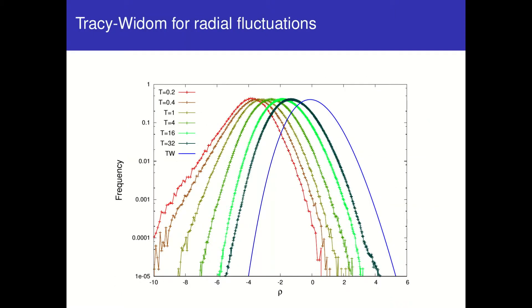Here we can see a histogram of the radial fluctuations of the balls compared to the well-known Tracy-Widom probability distribution function connected to the extreme eigenvalues of random Hermitian matrices.